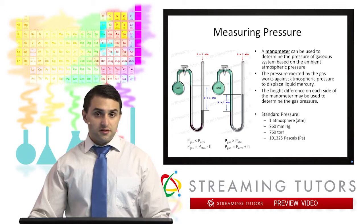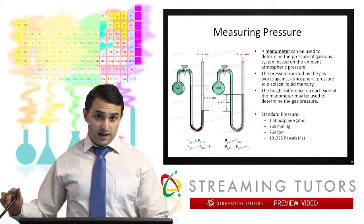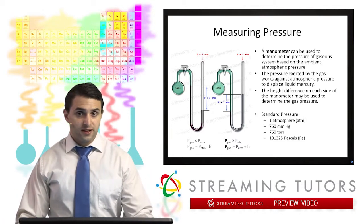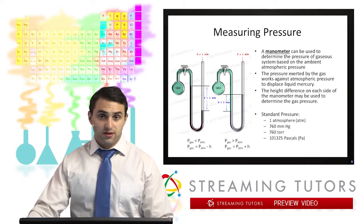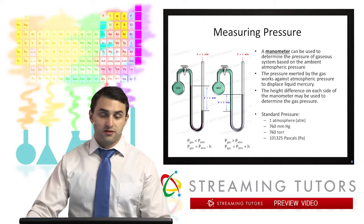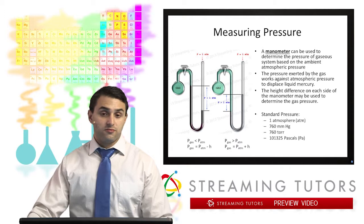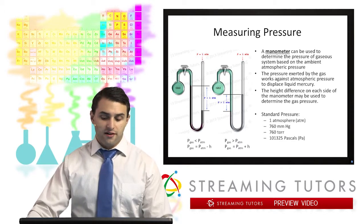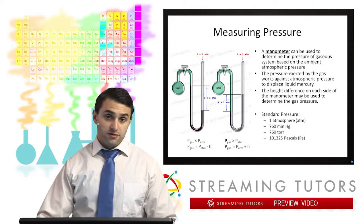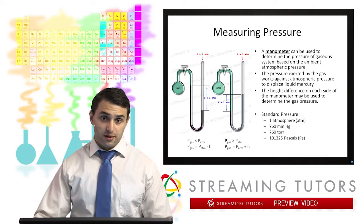One other thing to note is that the standard atmospheric pressure is equal to one atmosphere as our most basic unit. That's also equal to 760 millimeters of mercury from this setup, also equal to 760 torr, or 101,325 pascals — also written as 101.325 kilopascals, which is probably a common way you've seen pressure on the weather channel or something like that.